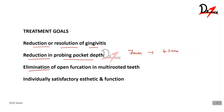We also expect the elimination of open furcations in multi-rooted teeth. The furcation areas in multi-rooted teeth are areas which are plaque-retentive factors, so our expectation is that we completely eliminate these open furcations. Ultimately, the most important goal of treatment is the individual's satisfaction in terms of aesthetics and function. Any patient will come to you because of these two problems — either they have pain and are not able to eat, or they have aesthetic concerns such as crowding making it difficult to smile. At the end of treatment it is very important that the patient is satisfied and the problems they came with, either aesthetic or functional, are completely resolved. These are the four important goals of any periodontal treatment plan.